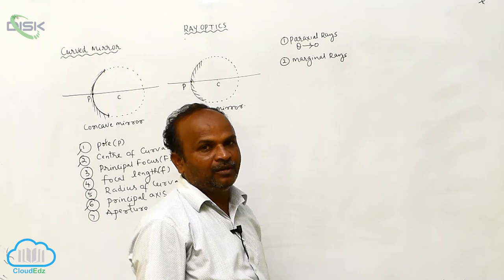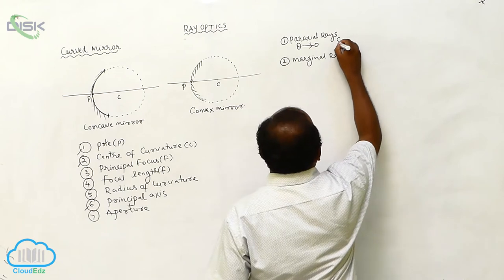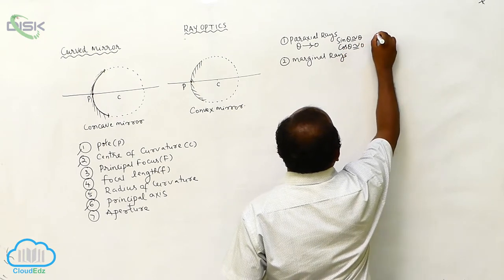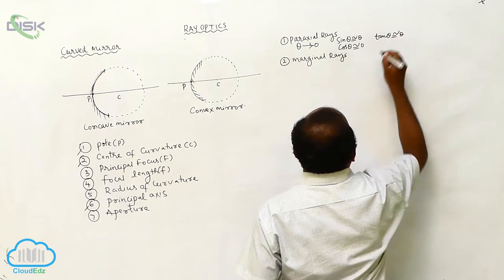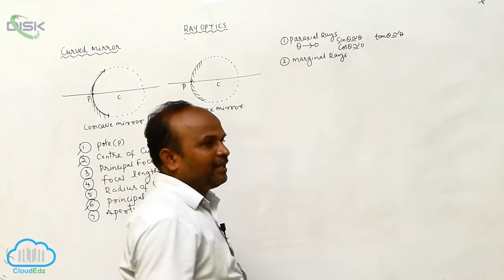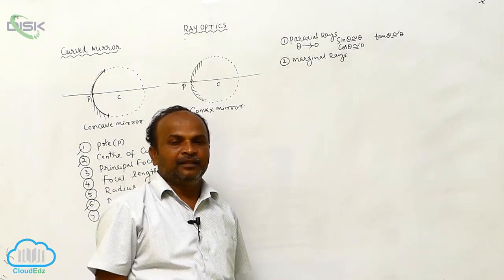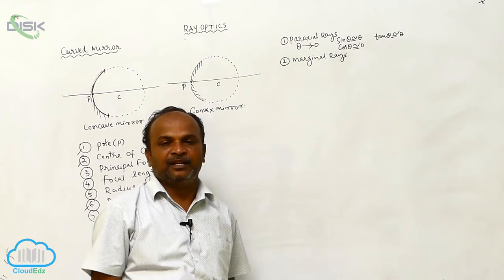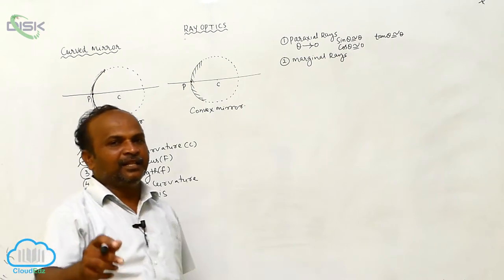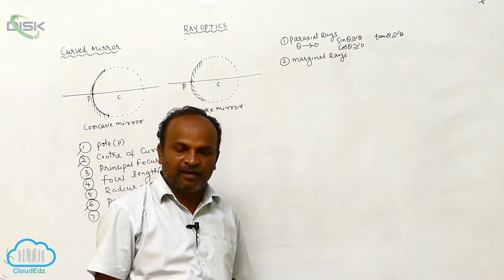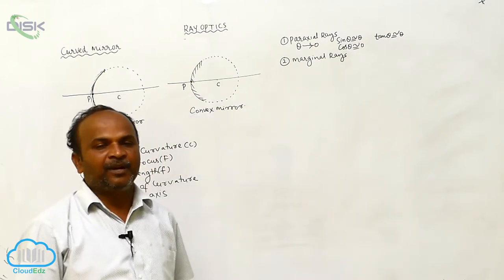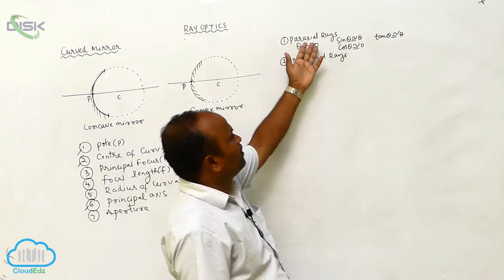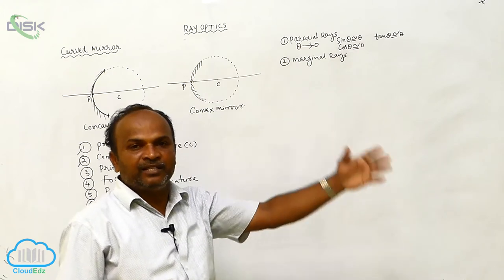Since theta tends to 0, the angles are very very small mathematically. Therefore: sin θ ≈ θ, cos θ ≈ 1, and tan θ ≈ θ. These approximations are useful when calculating formulas related to mirrors using paraxial rays.